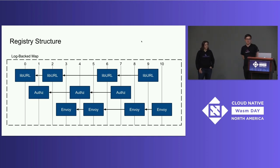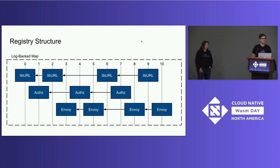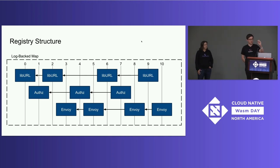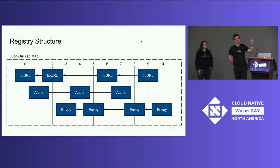That means that at any point in time in the system — these vertical lines here represent the system at different points in time — there is a signed root hash for the log and map that represents the system at that time. And if you have that, there are some cool things you can prove that sort of encode the state. For example, you can take the state at slice three and at slice six, and you can cryptographically verify that everything that was in three is in six.